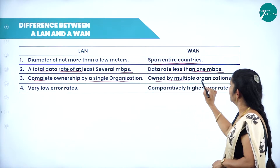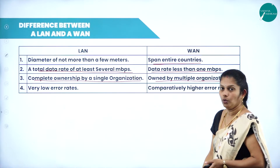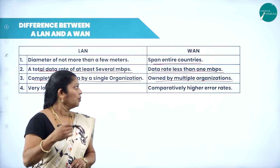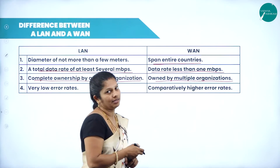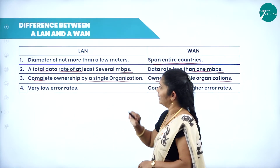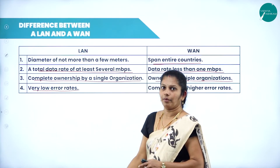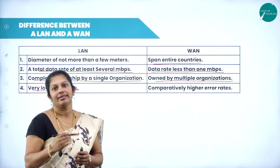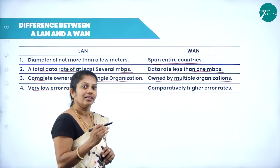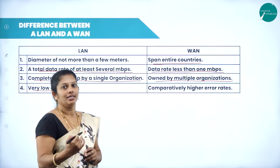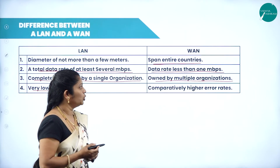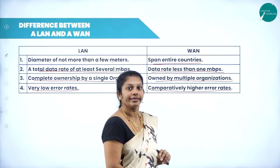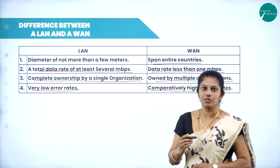In WAN, wide area means large area from one country to another country, so more than one organization is involved. Another difference: LAN has very low error rates because only a small area is covered and transactions are also very few. But in WAN, comparatively, higher error rates will be more. This is the major difference between LAN and WAN.